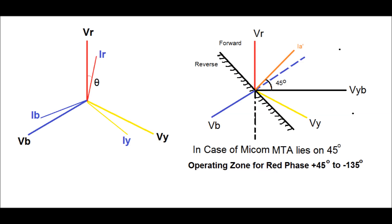Now, how does the directional relay determine the fault in the forward direction? To sense the directional features and differentiate between forward and reverse direction, the directional relay uses the PT voltage. The phasor diagram for the directional relay has been shown in the left side diagram.